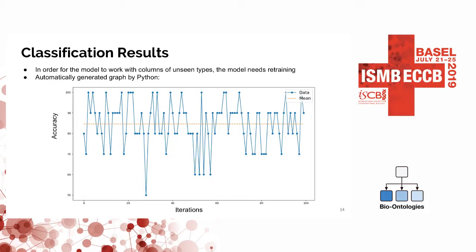This already worked a lot better. We did 100 test iterations to test our model. You can see that it doesn't vary as much, which tells us that the model is stable. Also, the accuracy is quite high — the mean accuracy is actually 85%, and the model only reaches 50% and doesn't go below that, just once.